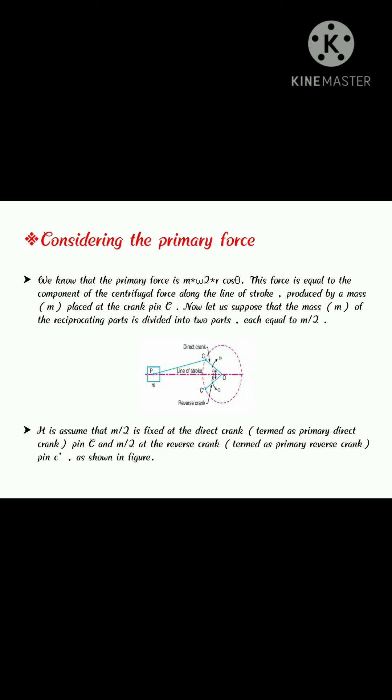Now, considering the primary forces. We have already discussed that primary force is M omega square R cos theta. This force is equal to the component of the centrifugal force along the line of stroke produced by a mass placed at the crank pin C.